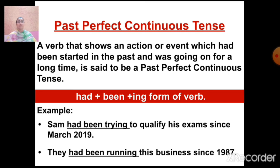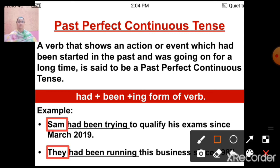Another example: 'They had been running this business since 1987' — meaning they are still doing the same business. Here in the first sentence, Sam is singular in subject, and in the second sentence 'they' is plural in subject. So no matter whether the subject is singular or plural, the formula remains the same: had plus been plus ING form of verb.